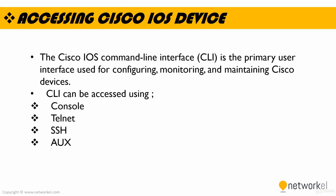So how can we access Cisco IOS devices? The Cisco IOS command line interface is the primary user interface used for configuring, monitoring, and maintaining the Cisco devices. This CLI allows you to enter partial Cisco IOS configuration commands. The software recognizes a command when you enter enough characters of the command to uniquely identify it. And CLI can be accessed using a console port, telnet, SSH, or AUX port.